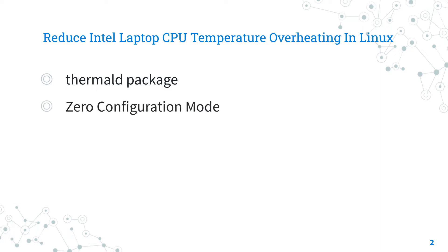The Thermal-D tool operates in two modes. Zero configuration mode — for most users this should be enough to bring the CPU temperature of the system under control. This uses the DTS temperature sensor and uses Intel P-State driver, power clamp driver, running average power limit control, and CPU-FREQ as cooling methods.